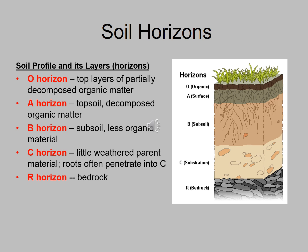Soil scientists look at a number of characteristics of the soil type to determine its properties and how it will function for human purposes. Let's look at soil horizons — one of the characteristics used to assess and determine the type of soil. Soil horizons are also known as the profile of the soil, or its layers.